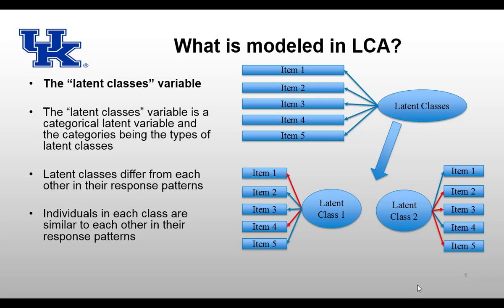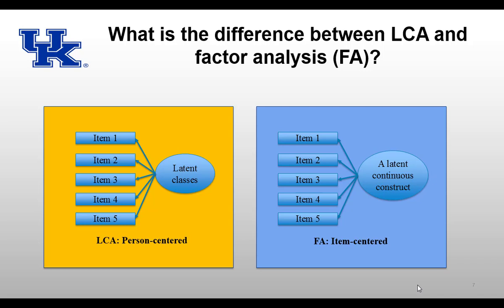What does that tell us? Two things: first, latent classes differ from each other based on response patterns. Second, individuals in the same latent class have similar response patterns. You might notice the figure looks similar to factor analysis. So what is the difference between LCA and factor analysis? The most important difference is LCA classifies people, not items. LCA is called a person-centered approach, while FA is called an item-centered approach. When you model a categorical latent variable you are doing LCA, but when you model a continuous latent construct you are doing FA.